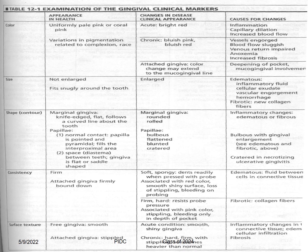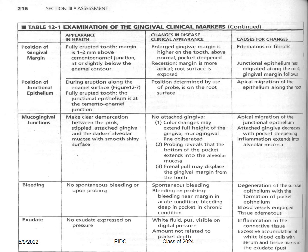A summary table is presented listing all clinical features in their healthy status, their disease status, the reason for change, and the causes of those changes. Students are encouraged to review this chart as a useful reference covering the entire lecture content. Any doubts can be referred back for clarification.